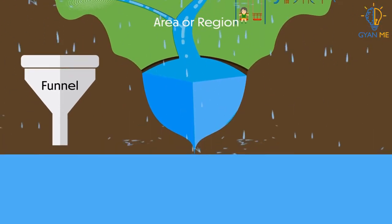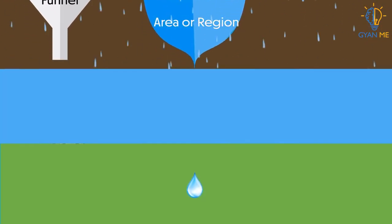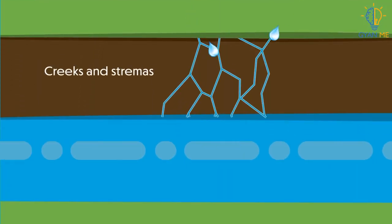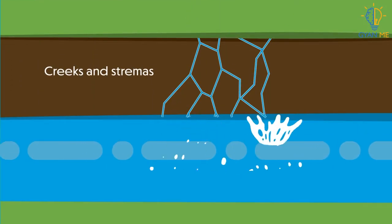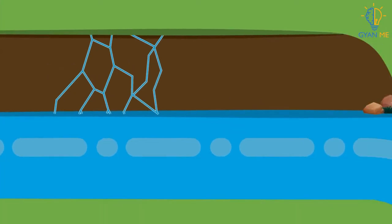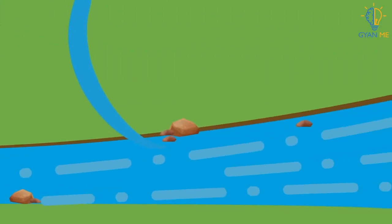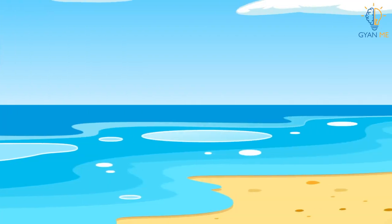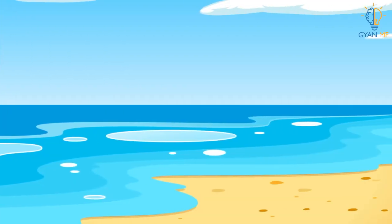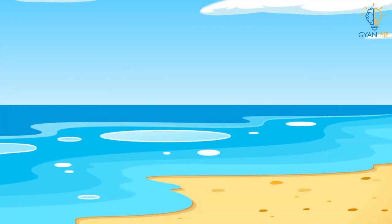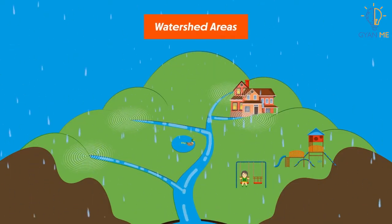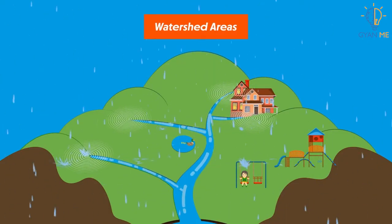It may be drop by drop or through underground water, creeks and streams, making its way into large water bodies and eventually into the oceans. Thus, these areas or regions of land called watershed areas are very important for conserving water.